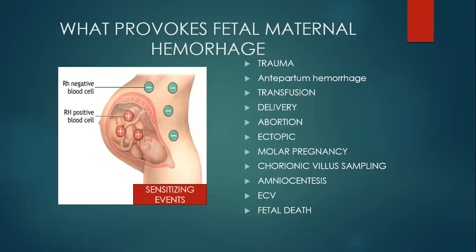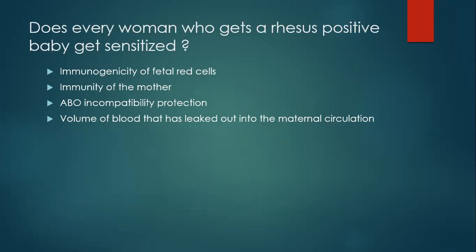There are other incidents where fetal red blood cells can seep into the maternal circulation and cause isoimmunization. These include trauma, antepartum hemorrhage, wrong blood transfusion, blood mixing during delivery, abortion, ectopic pregnancy, molar pregnancy, and procedures like chorionic villus sampling, amniocentesis, and external cephalic version. All these are times when fetal blood can enter the maternal circulation and cause antibody production in the mother.